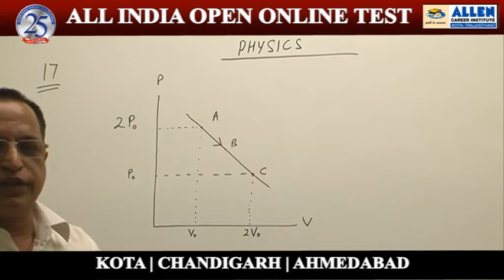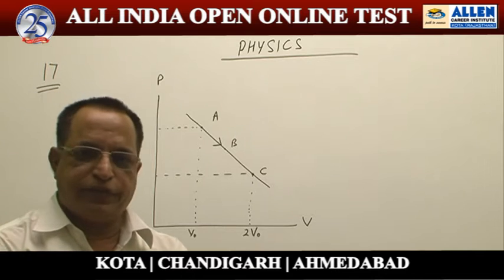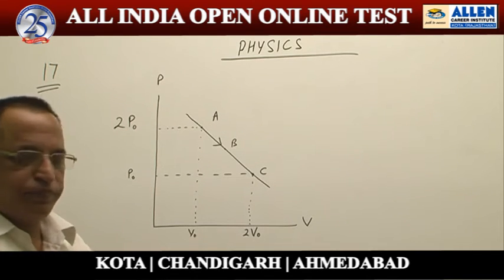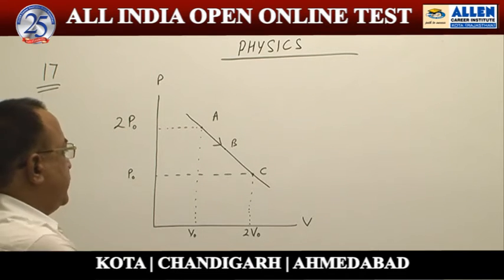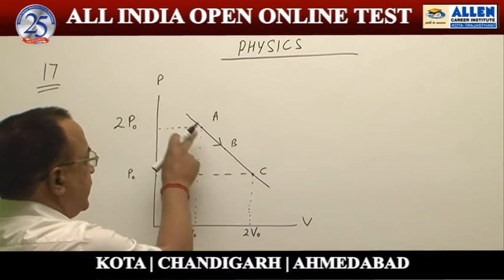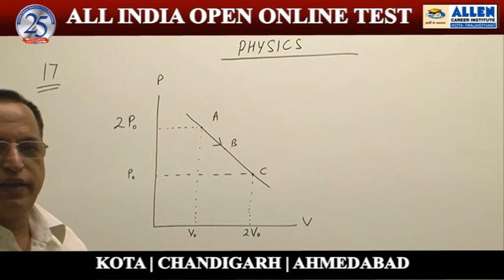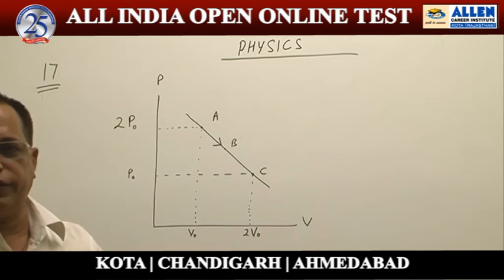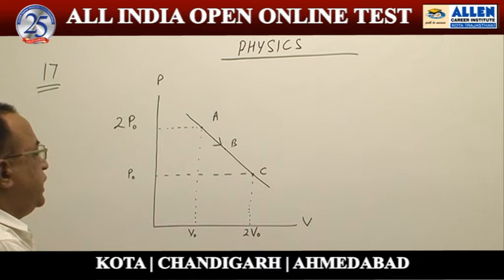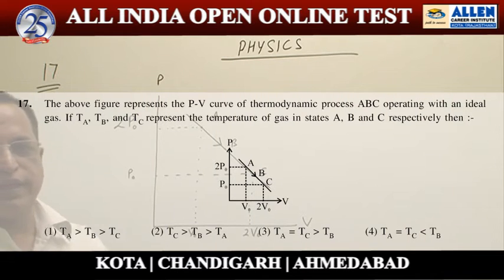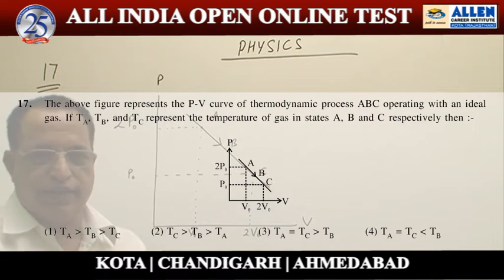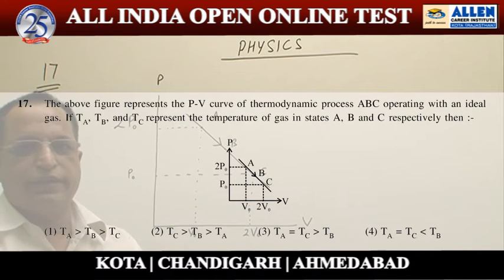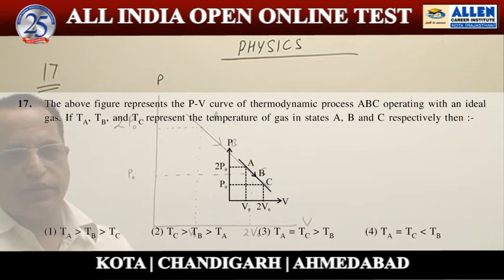This problem is related to thermodynamics. This curve is a PV diagram. This process is represented by a straight line going through points A, B, and C.